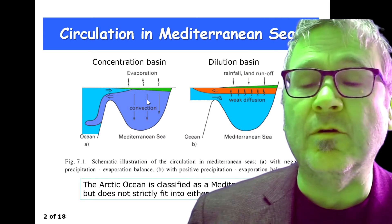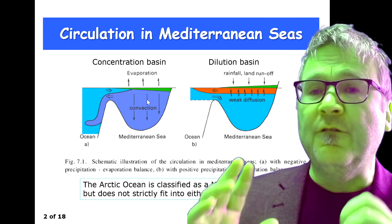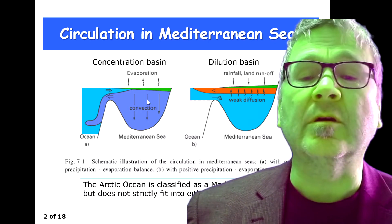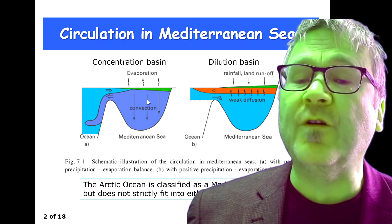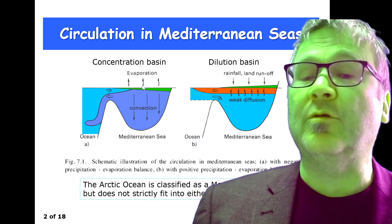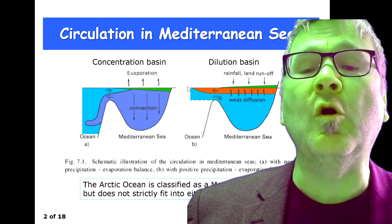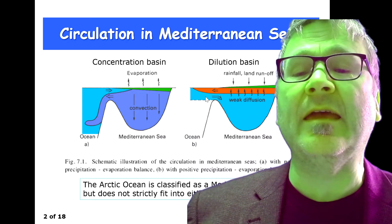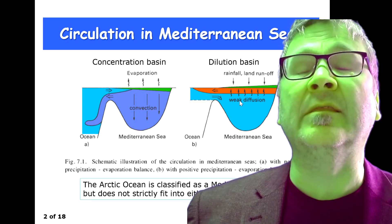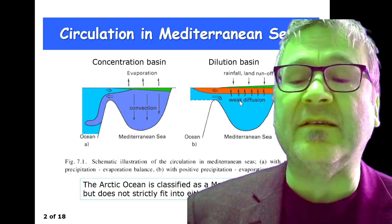On the other hand, in a dilution basin, you have an excess of fresh water input through land runoff and rainfall. You get an outflow near the surface and a return flow through the bottom layer into that system. This is what we call a dilution basin.